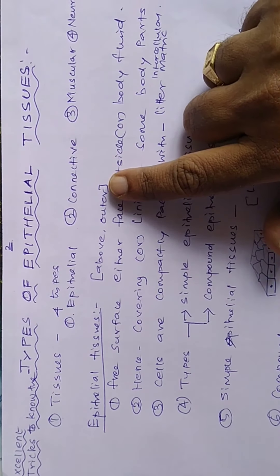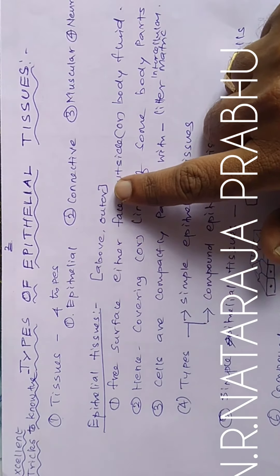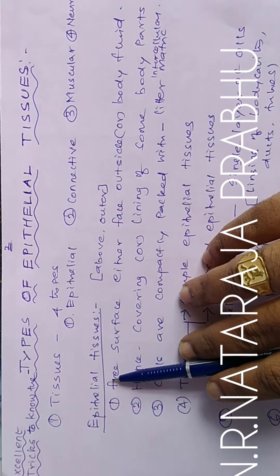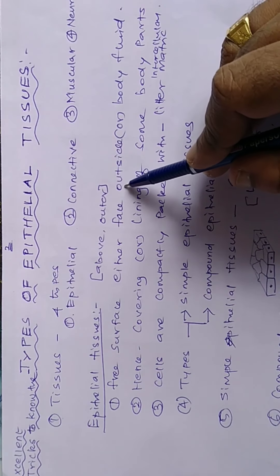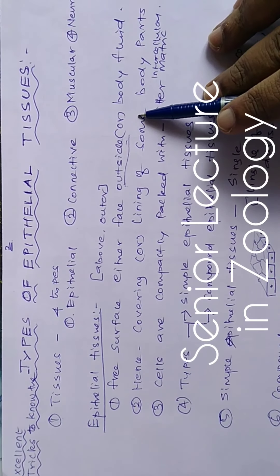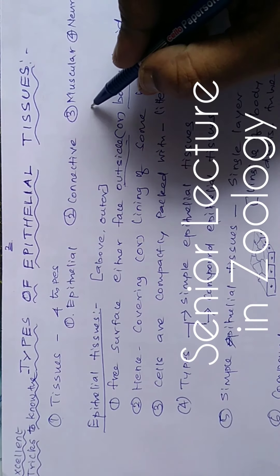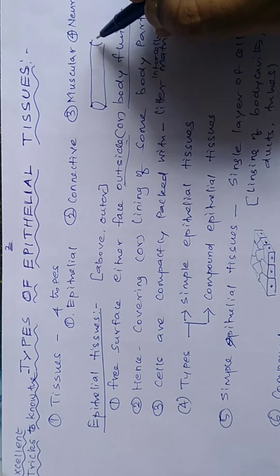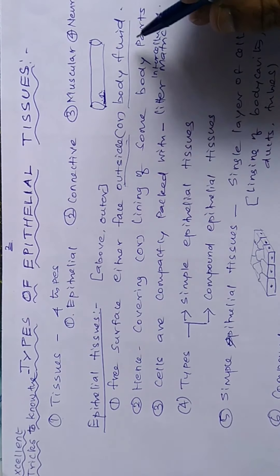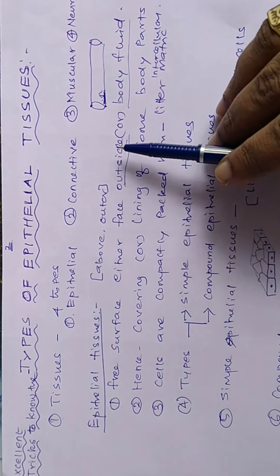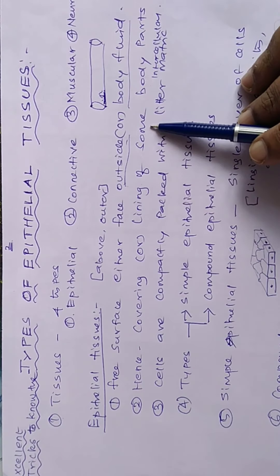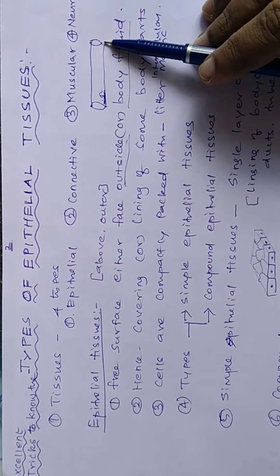Epithelial tissue — the prefix 'epi' means above or outer. Usually the tissue has two surfaces. One surface of the epithelial tissue either faces the outside environment — for example, our skin is epithelial tissue facing outside — or else it faces the body fluid. For example, the epithelial tissue present inside the blood vessels faces the body fluid such as blood. So the location of the epithelial tissue is either as an outer covering or as a lining of some body parts such as blood vessels.